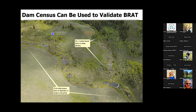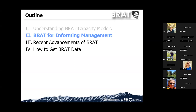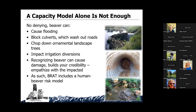Shifting gears — beaver are going to cause problems in the built environment, and as a result a capacity model alone is not enough. We need some type of risk model that assesses these impacts. Having a risk model builds credibility with those people that are impacted. I think it's one of the reasons why the BRAT model has been taken up by a diversity of groups — with that recognition that beaver in the wrong setting can cause serious damage.